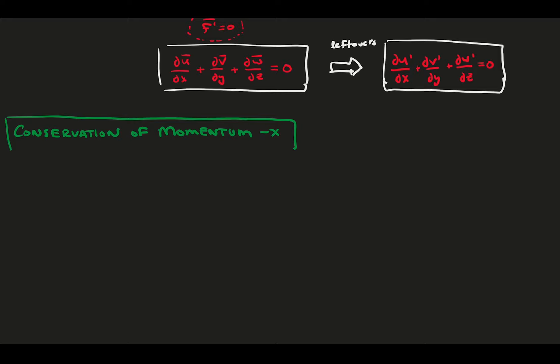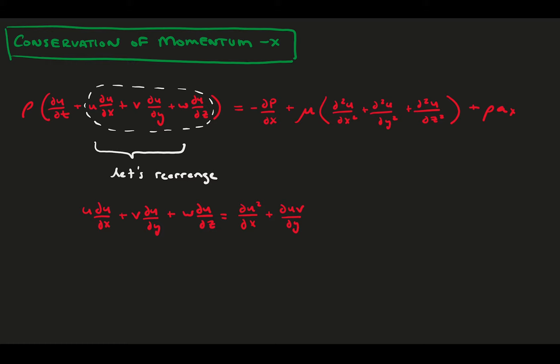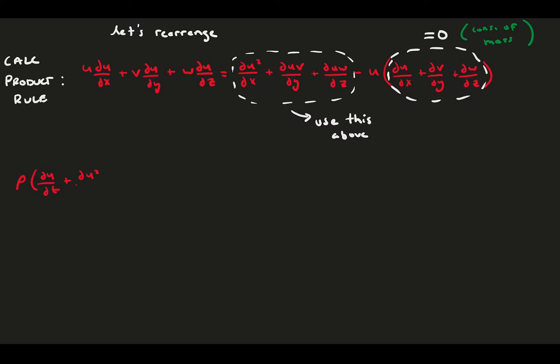We'll do it for the x direction, but the derivation applies similarly to the y and z directions. Here, we're going to use a neat trick we do a lot in dealing with the conservation of momentum and derivation. Often, we will make use of the product rule or other calculus rules to get terms to group together that look a lot like other equations. In this case, we use the product rule to bunch together terms that make up conservation of mass, which we know to be zero. The end result is for our benefit. In this case, it makes it easier to do math with the Reynolds decomposition because it moves all the products into the derivatives.